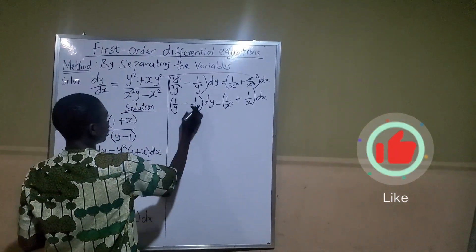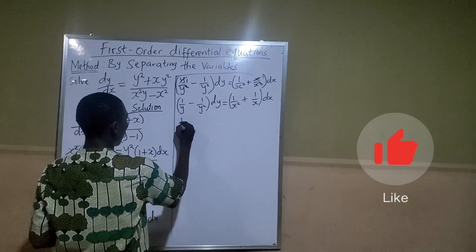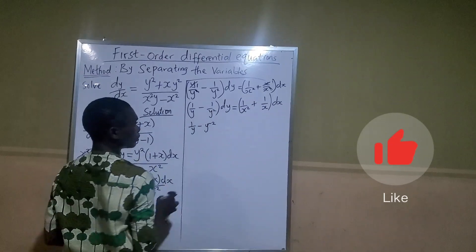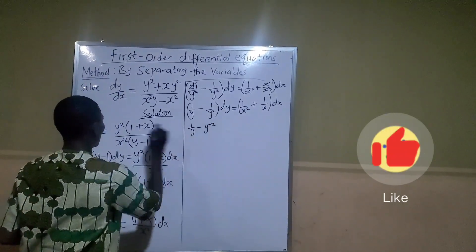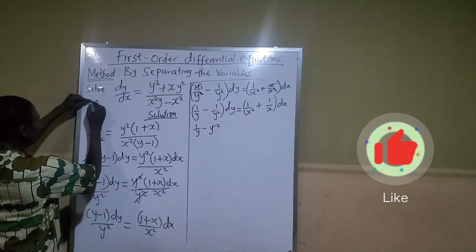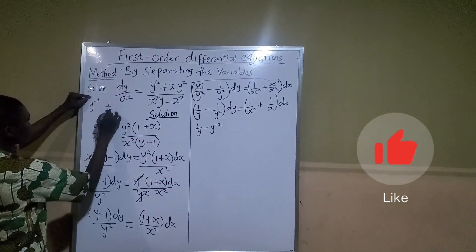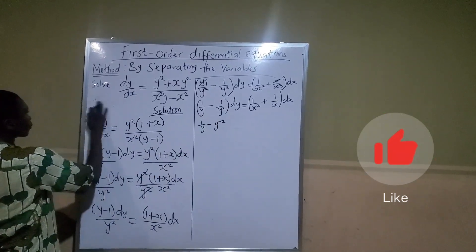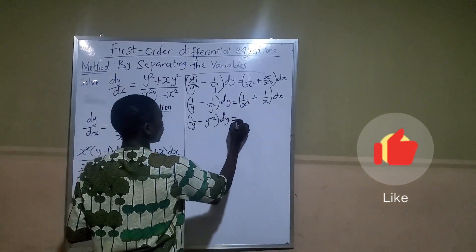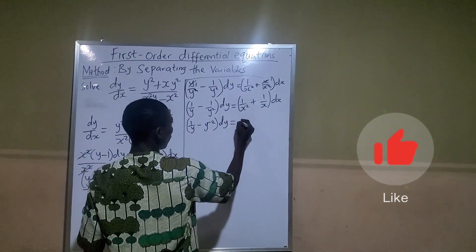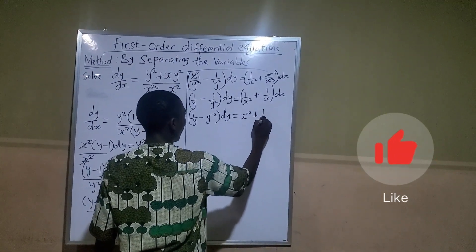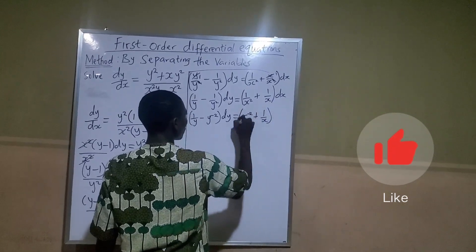I can further simplify this. One over y squared is the same as y raised to the power of minus two — remember, one over y to a power means you change it to a negative exponent. So the left side is one over y minus y raised to the power of minus two, all into dy. On the right side, one over x squared is x raised to the power of minus two, plus one over x, all into dx.